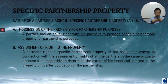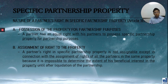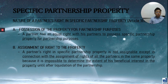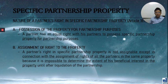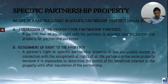As partner A, I know I have a right in that car, but if I have a creditor, I cannot assign to them my right in the specific partnership property. Why? Because number one, it is partnership property, and number two, it is difficult to determine my beneficial interest. The exception is that the right to specific partnership property can be assigned to a creditor if all of the partners consent.